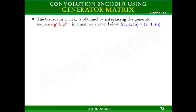The generator matrix for a convolution encoder can be obtained by interlacing the generator sequences G1, G2, and so on in the manner shown below. For this we are going to consider the block size of the convolution encoder as NKM, where N is considered as 2, K as 1, and there will be M number of memory units or shift registers.